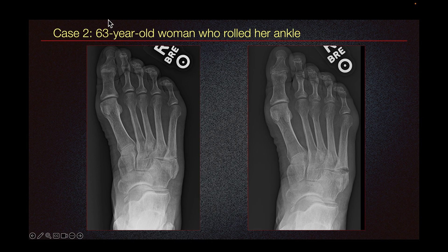We have a case of a 63-year-old woman who rolled her ankle. We can see that this fracture does not involve the tarso-metatarsal articulation, but it does seem to involve the inter-metatarsal articulation, so this is an example of a Jones fracture. At three-month follow-up, the fracture has gotten wider and the patient has persistent pain, so this fracture did not heal well.